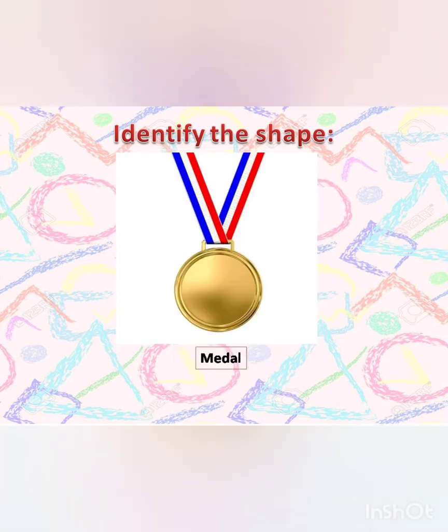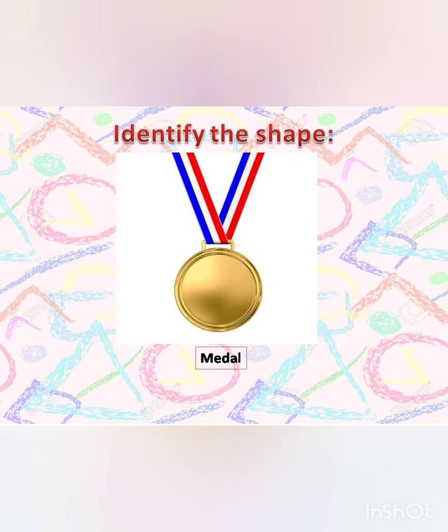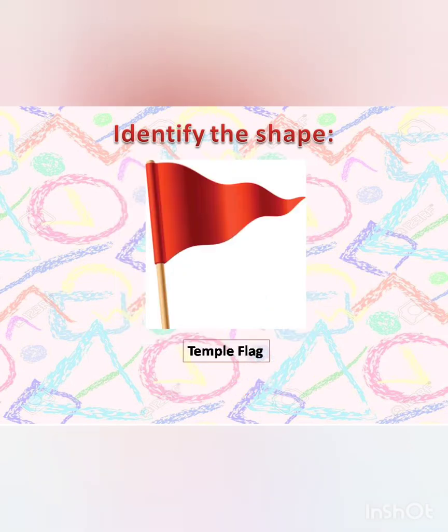Now, my next example is a medal. Identify the shape of a medal. It is round and has no corners. The answer is circle. Our next object is a temple flag. Have you ever noticed a temple flag? Identify its shape. The shape of the flag is triangle. Great — you are good at identifying the shapes!